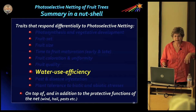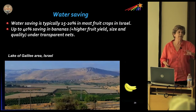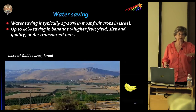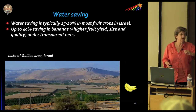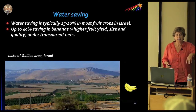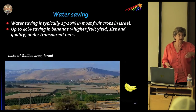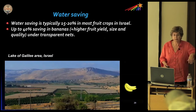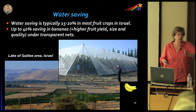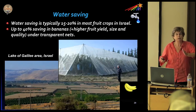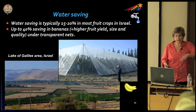On water use efficiency: there is huge potential to use netting for water saving. Banana is the extreme case in Israel, in the Jordan Valley and around Lake Galilee — up to 40% irrigation water savings. In deciduous fruits, water savings of 15–25% were observed. Water consumption saving by netting is a significant benefit.